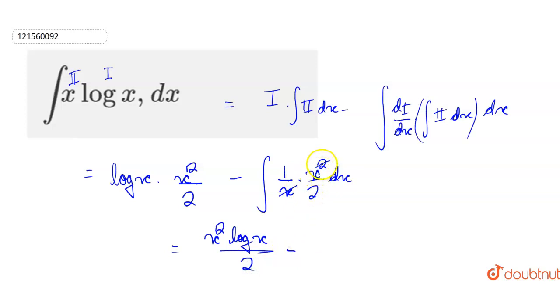So what was x/2? Integrating x/2 gives us x²/4. So the final answer is x²·log(x)/2 minus x²/4.